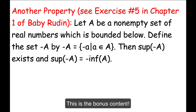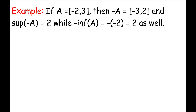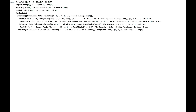Next, we take the time to note another property of sups and infs — that happens to be the content of Exercise 5 in Chapter 1 of Baby Rudin. Let capital A be a non-empty set of real numbers which is bounded below. Since the real numbers satisfy the greatest lower bound property, the inf of A will exist. Define a new set, negative A, to be the set of all additive inverses of the elements in capital A — the set of all negative little a as little a varies over capital A. Then the sup of negative capital A exists, and in fact it equals the negative of the inf of A — it is the additive inverse of the inf of A. Let's consider a simple example: let capital A be the closed interval from negative 2 to 3. Then negative A would be the closed interval from negative 3 to 2. The sup of negative A would be 2, while the additive inverse of the inf of A is also 2.